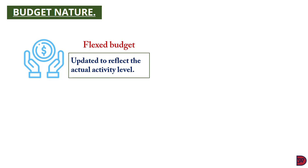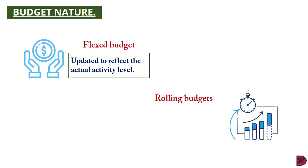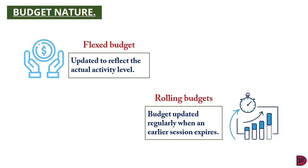With the flex budget, if the budget was prepared based on 50,000 units of sales — upon which material, labor, and overheads were estimated — and the actual outcome turns out to be 70,000, the initial budget will be updated to the 70,000-unit level and all other relevant budgets prepared accordingly. The last is the rolling budget, where the budget is updated regularly when an earlier session expires. If the budget is prepared for a year broken into four quarters, the moment quarter one expires, a fifth quarter will be added based on the outcomes of quarter one.